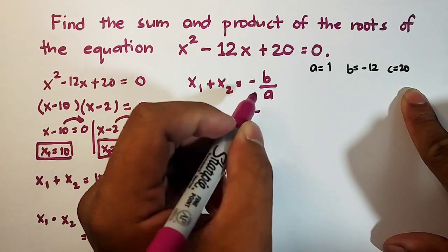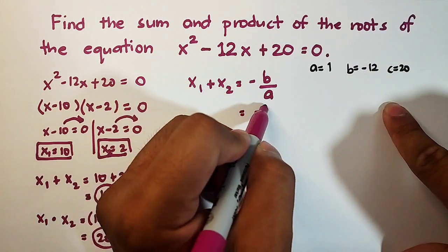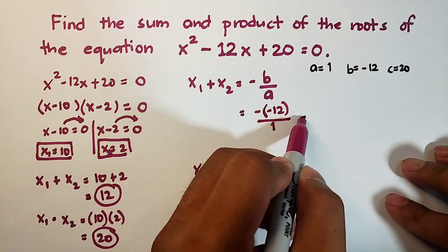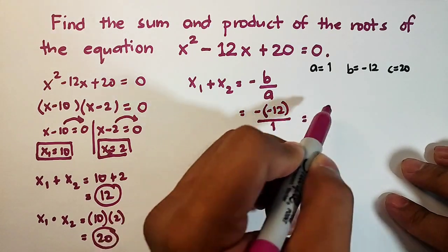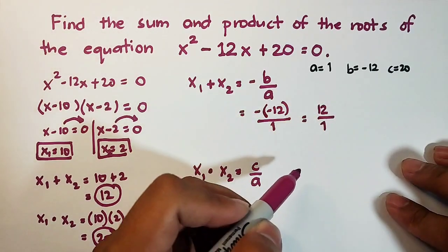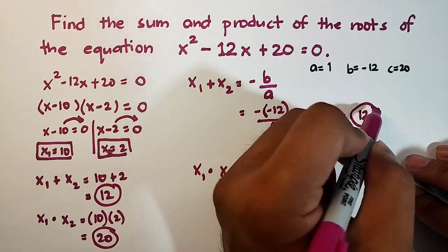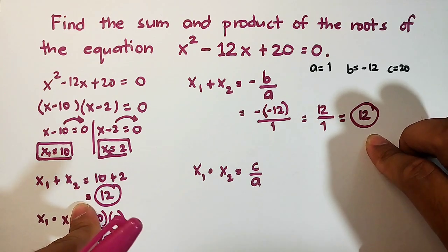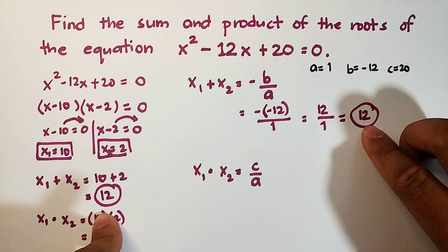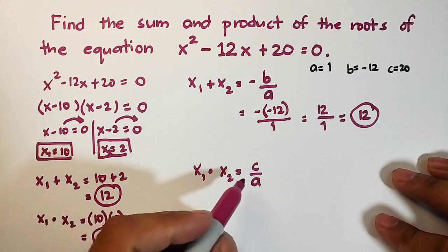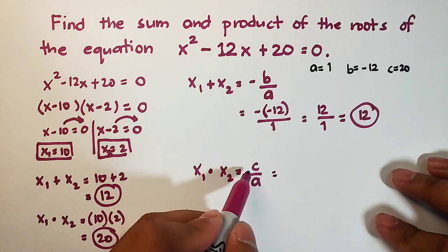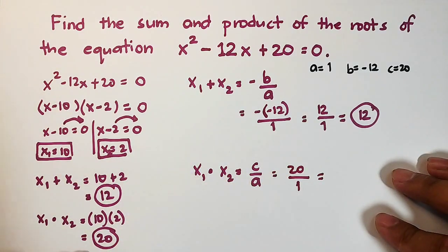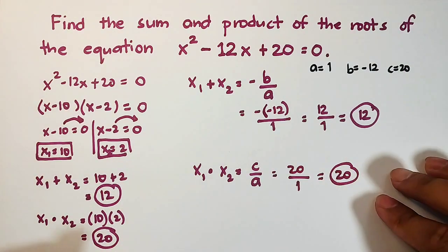For the sum, we have negative b over a: negative of negative 12, over 1. Negative times negative is positive, so this is 12 over 1, which equals 12. As you can see, using the formula and manually adding the roots gives the same answer. For the product, we use c over a: 20 over 1, which is simply 20. We still have the same answer.